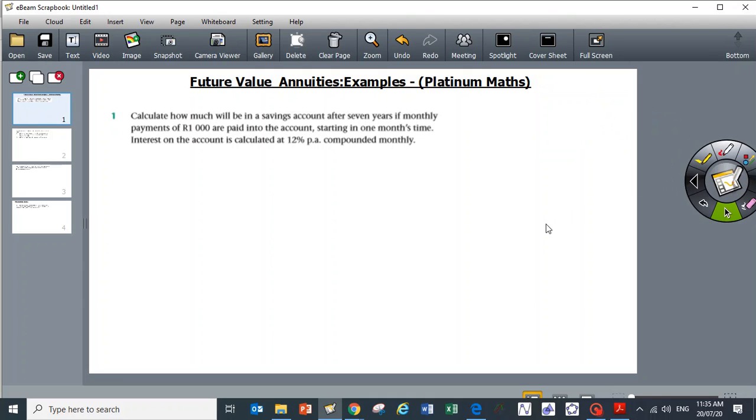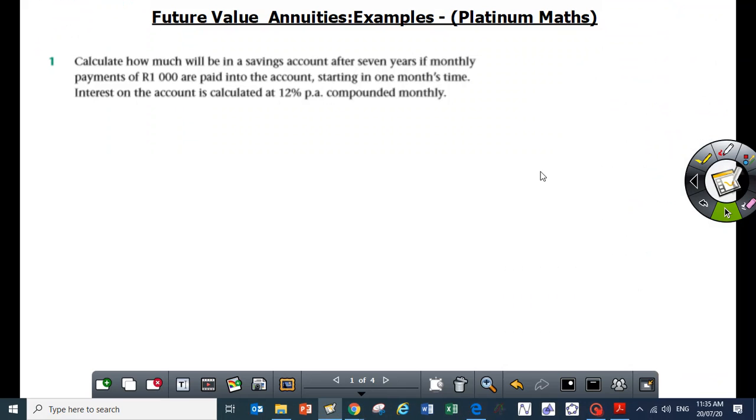Calculate how much will be in a savings account after 7 years if monthly payments of R1000 are paid into the account, starting in one month's time. Interest on the account is calculated at 12% per annum compounded monthly.